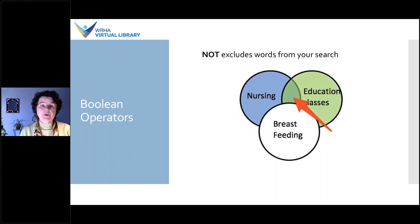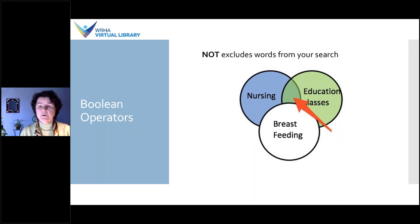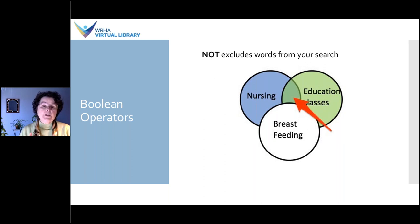There is another Boolean operator we caution you on using, and that is NOT — it excludes words from your search. For example, if you were searching for articles on nursing education but didn't want anything on breastfeeding, you would enter 'nursing education classes NOT breastfeeding.' The danger is that if an article abstract mentions 'we have decided not to address breastfeeding education classes,' you would have excluded that article even though it was a review on exactly what you were looking for.